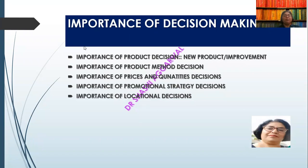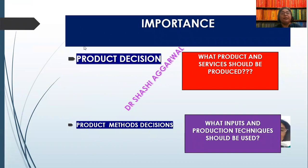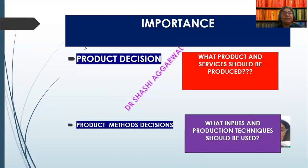What is the importance of decision making? There is importance in product decisions, importance in product method, importance in price and quantity decisions, importance in promotional strategy, and importance in location decisions — which we will study one by one. Product decisions involve many challenges: if there is a new unit, which product will be manufactured? Which service will be rendered? Which customers will be targeted? If already established, what innovations or variety can be added? If there are multiple products, how many units to produce of each, and what should the product mix be?